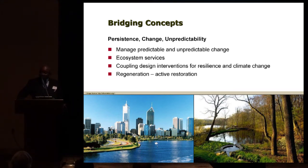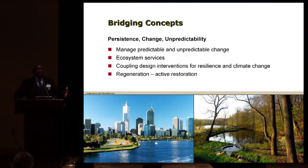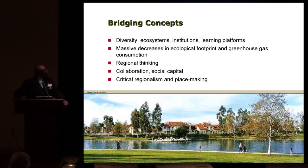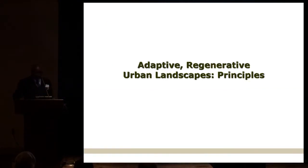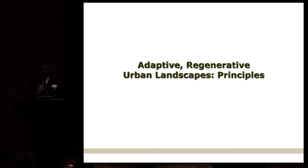It calls for coupling interventions for resilience and climate change, because climate change is one of the major disturbances we're trying to deal with. I suggest that to design resilient systems, you must simultaneously incorporate design for climate change. It calls for diversity in all its forms — in learning platforms, in institutions — experimentation, learning, and vast amounts of resident-related social capital. What I've tried to do is reorganize these bridging concepts into a series of principles to share with you.